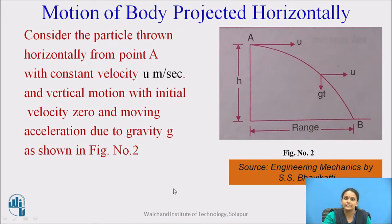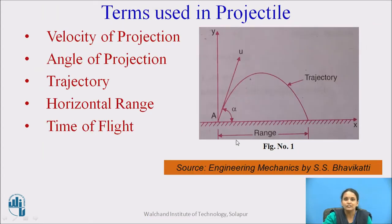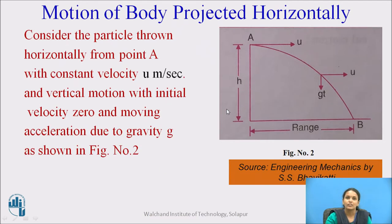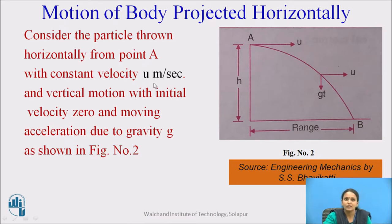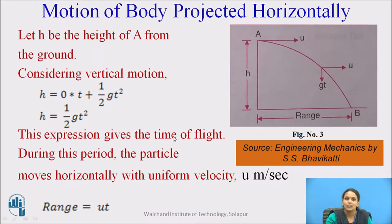Now, motion of body projected horizontally. In this figure, we have shown the motion of the particle as inclined. In general, I have explained the terms used in projectile. Now, when the motion of particle is horizontal, we will see what differences we get. Consider the particle thrown horizontally from point A with velocity u meters per second. The vertical motion has initial velocity of 0 and there is no horizontal acceleration.